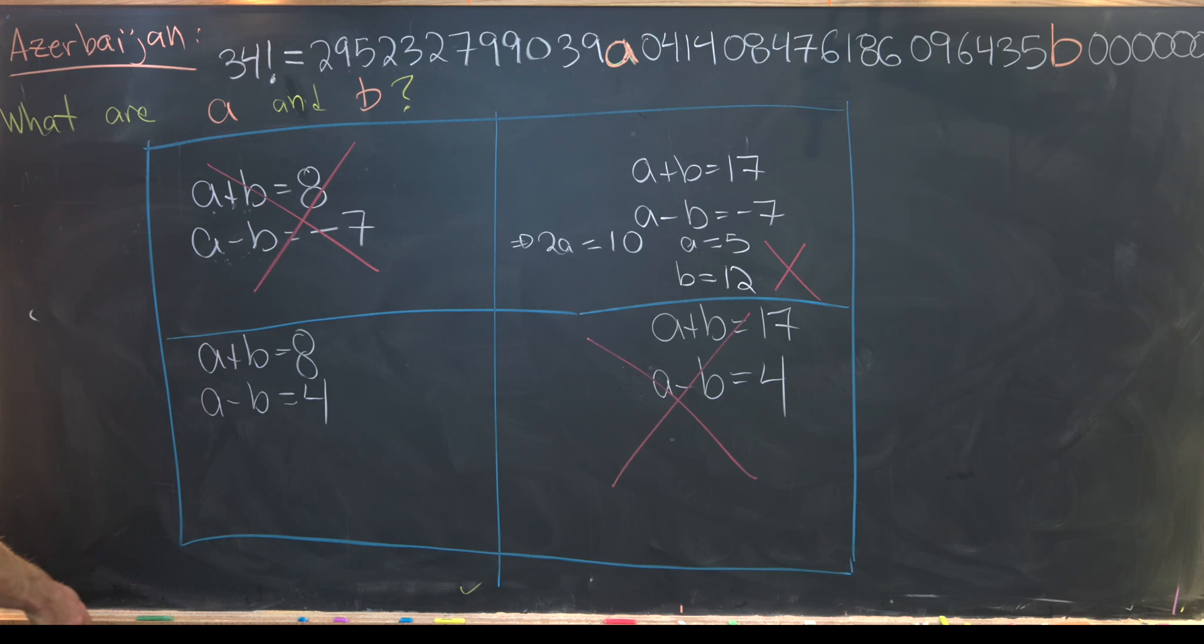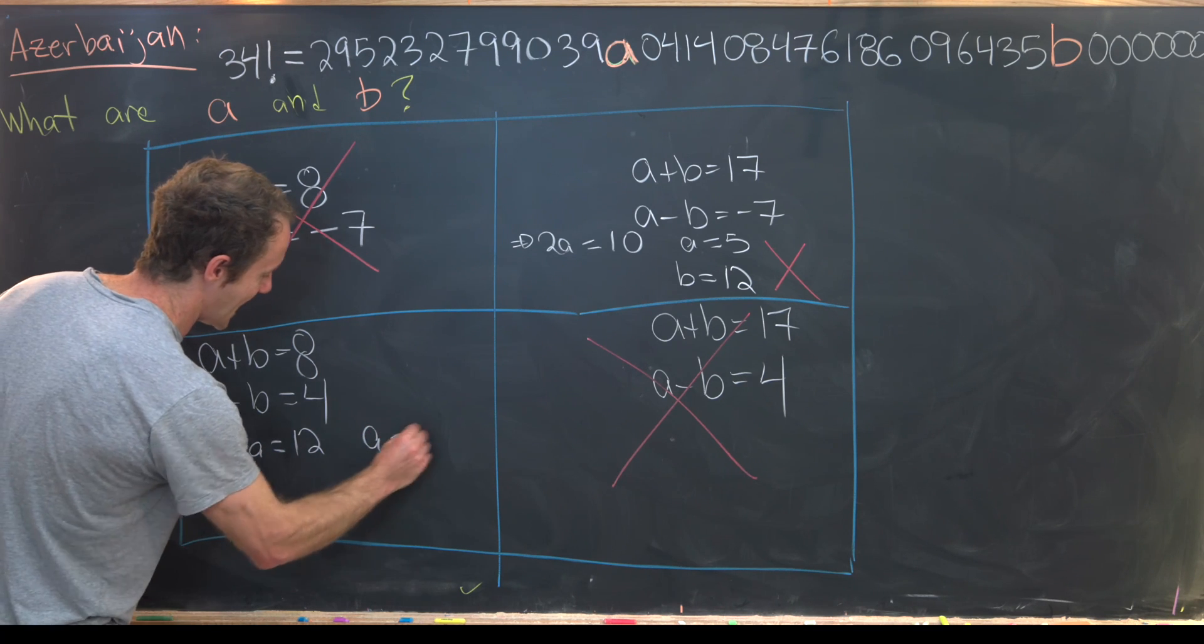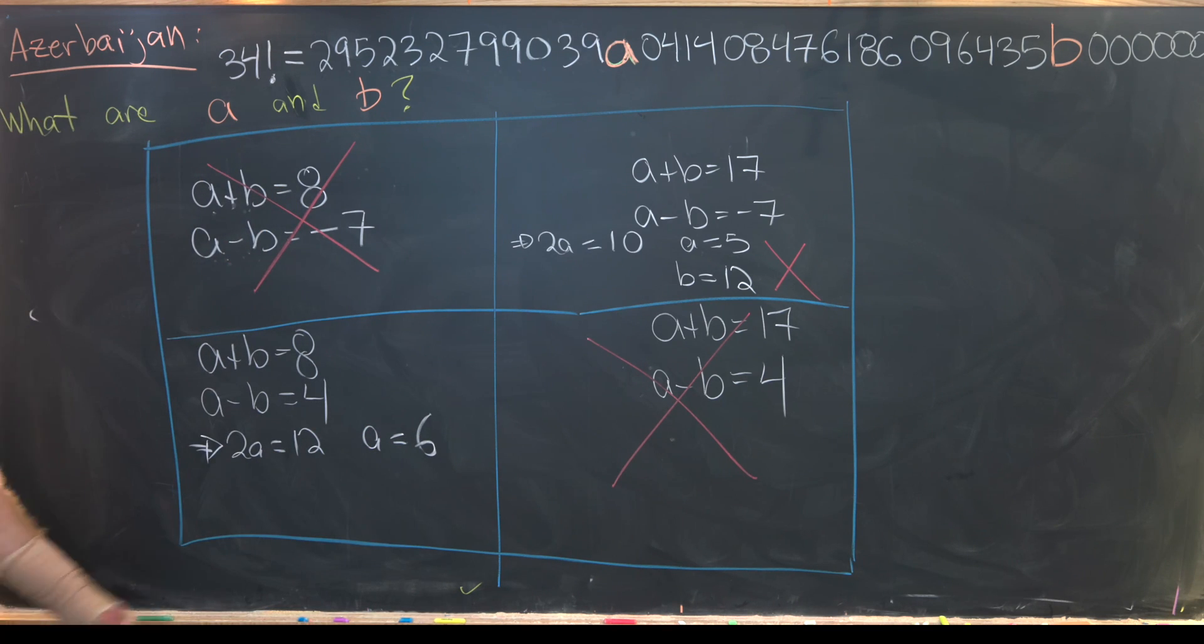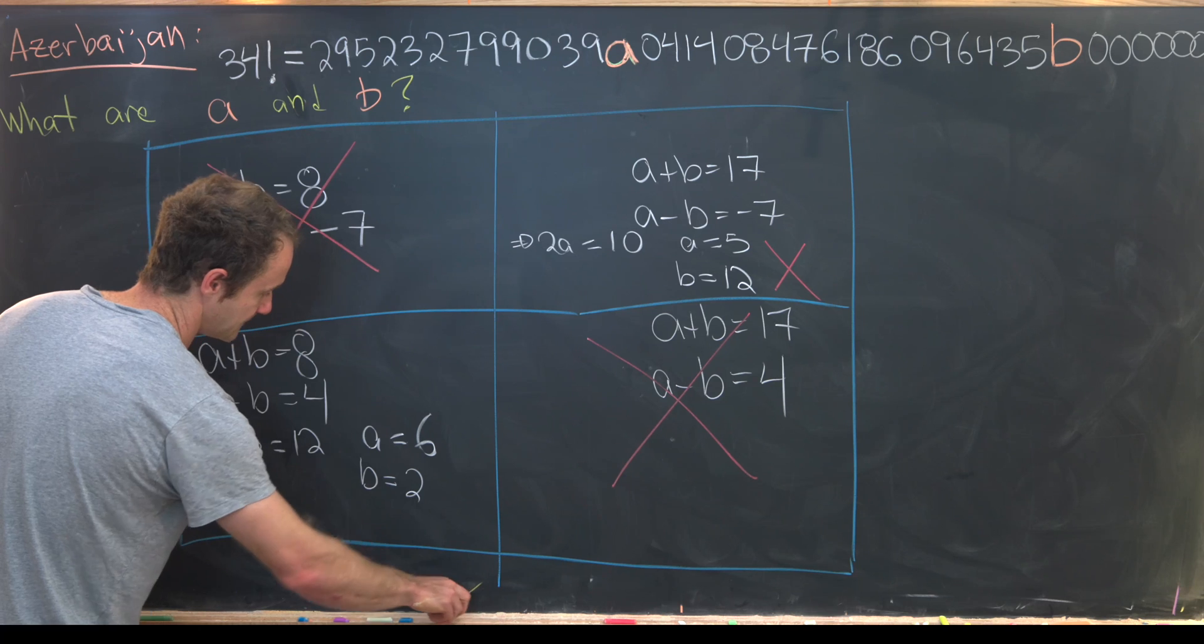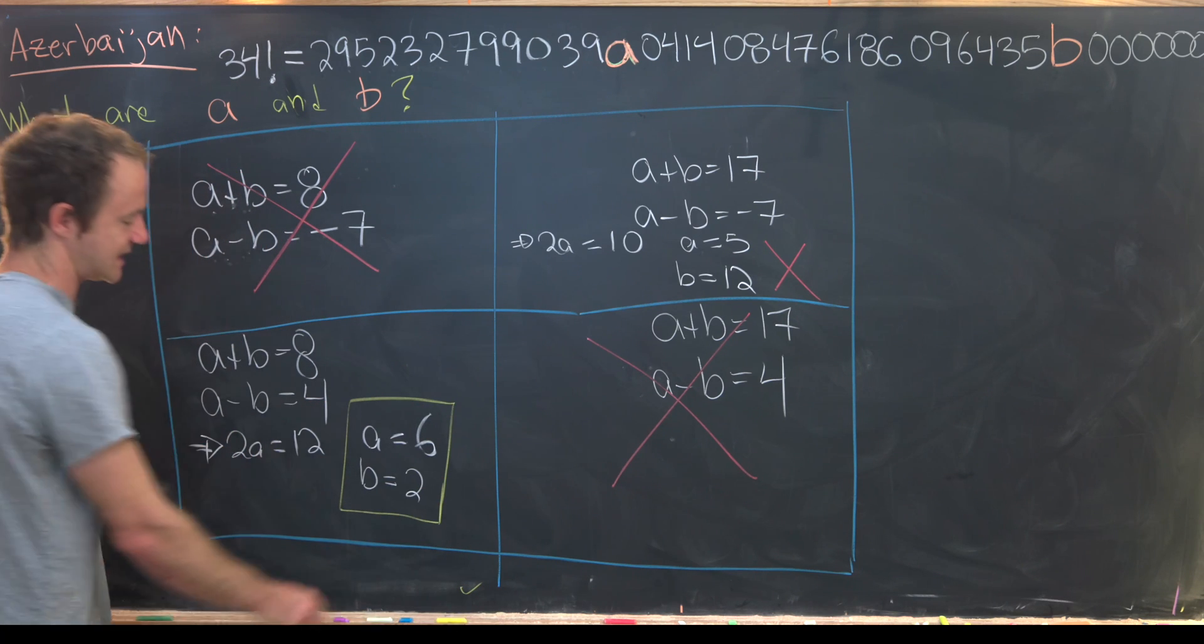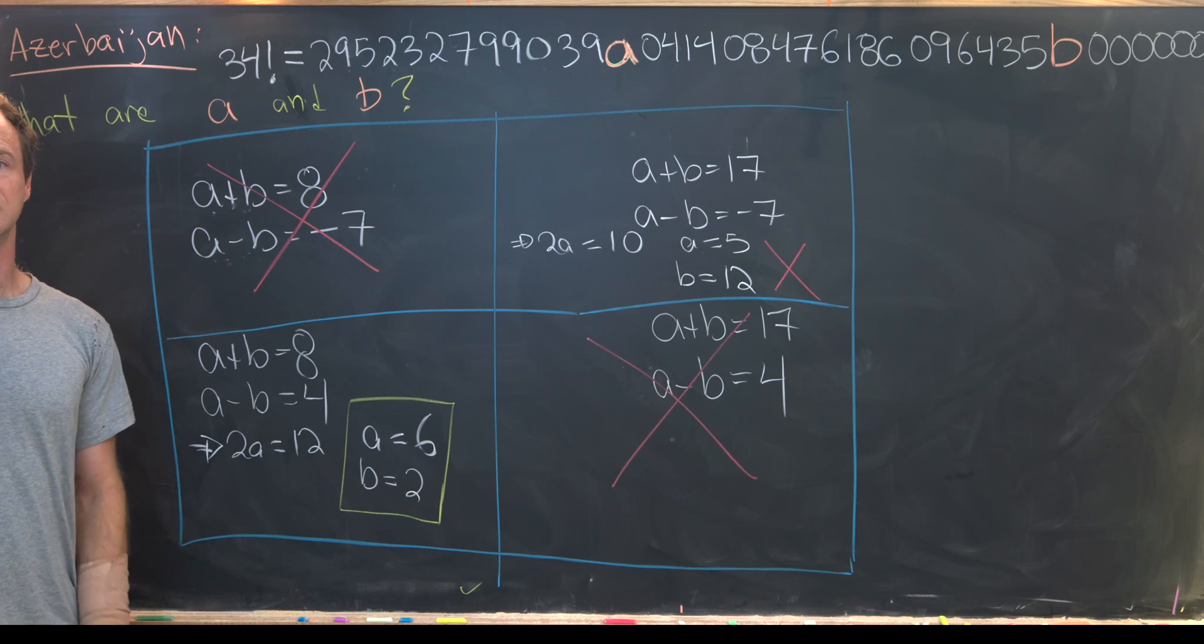So now let's look at what we've got here. We'll add these two equations again and we'll see that 2a is equal to 12. That means a is equal to 6. But now if a is equal to 6 plugged back up here we see b is equal to 2. And since that's the only remaining possibility that must be the correct answer. And that's a good place to stop.